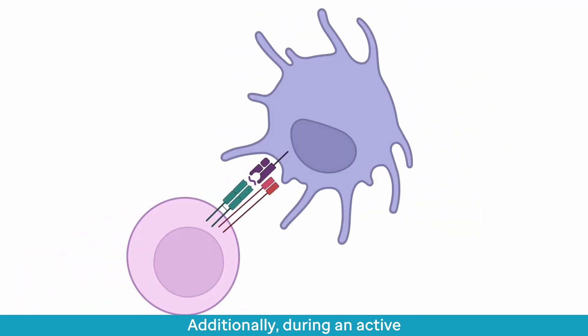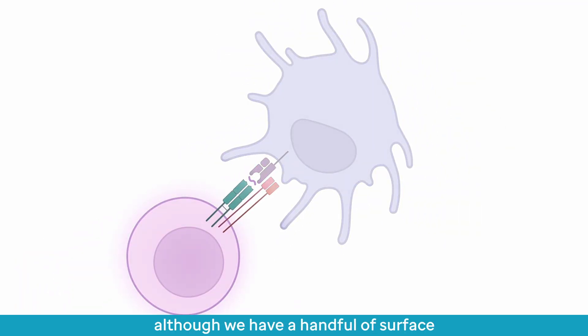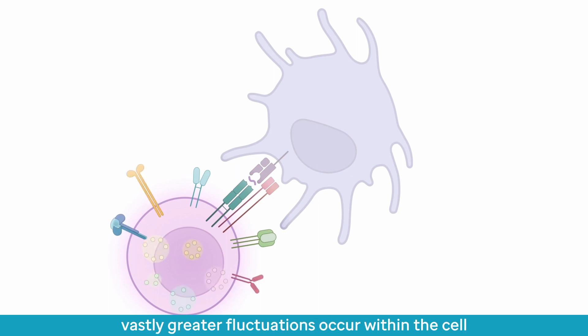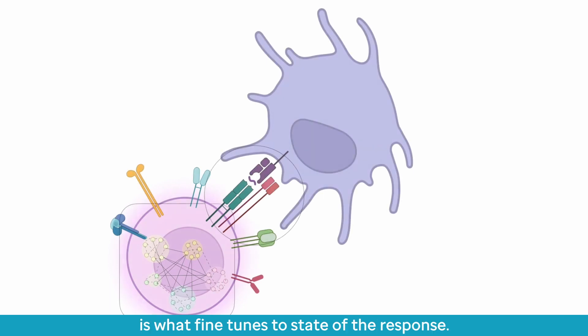Additionally, during an active T cell response, although we have a handful of surface proteins that can fluctuate on a responding T cell, vastly greater fluctuations occur within the cell involving hundreds of proteins. This complex network of interplay of these internal proteins is what fine-tunes the state of the response.